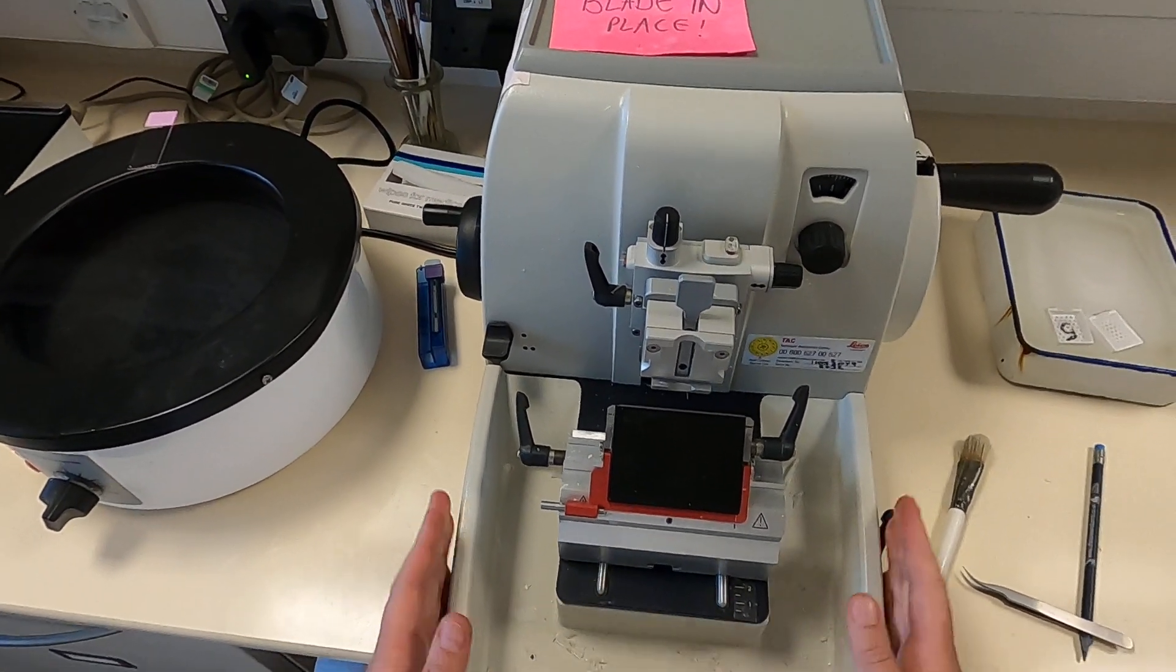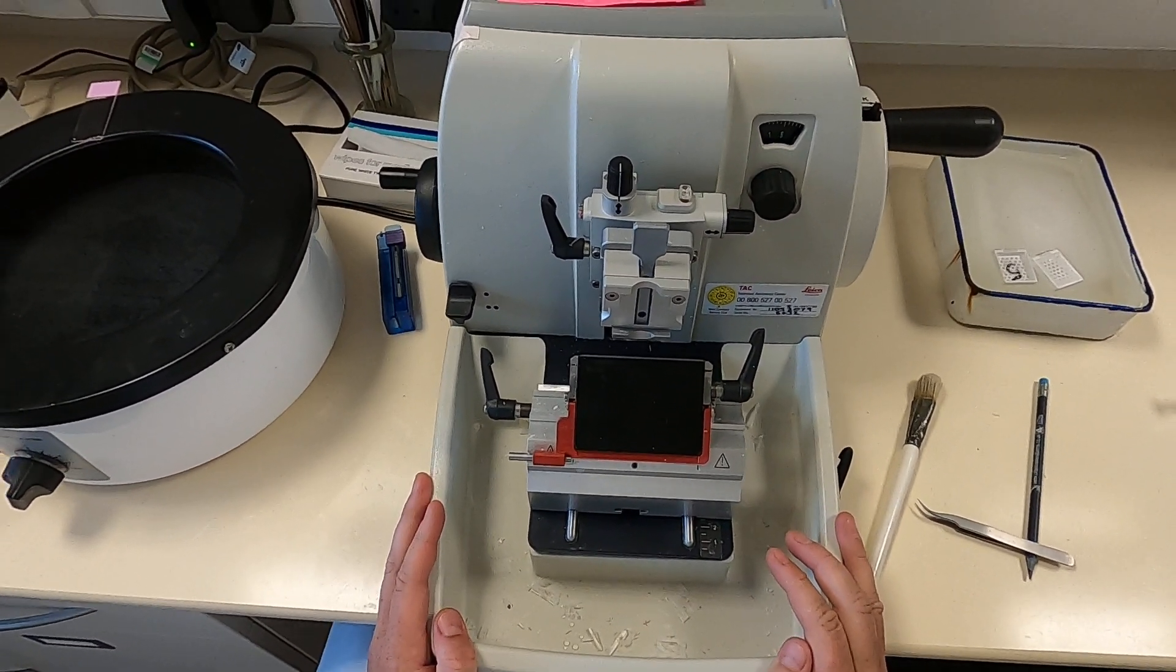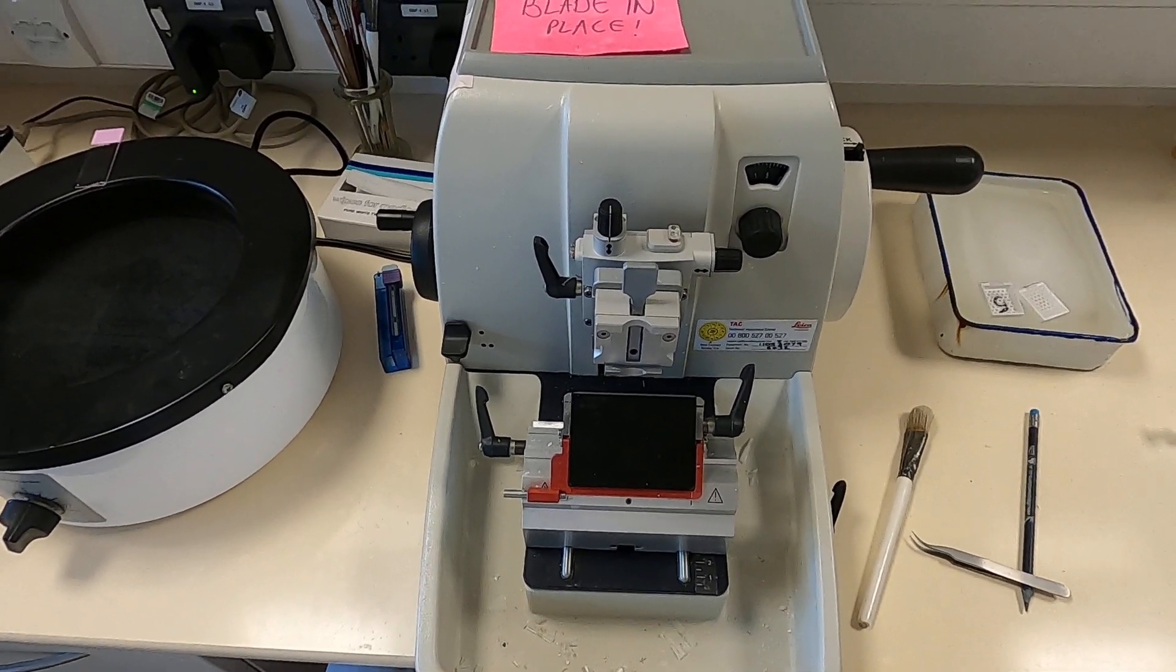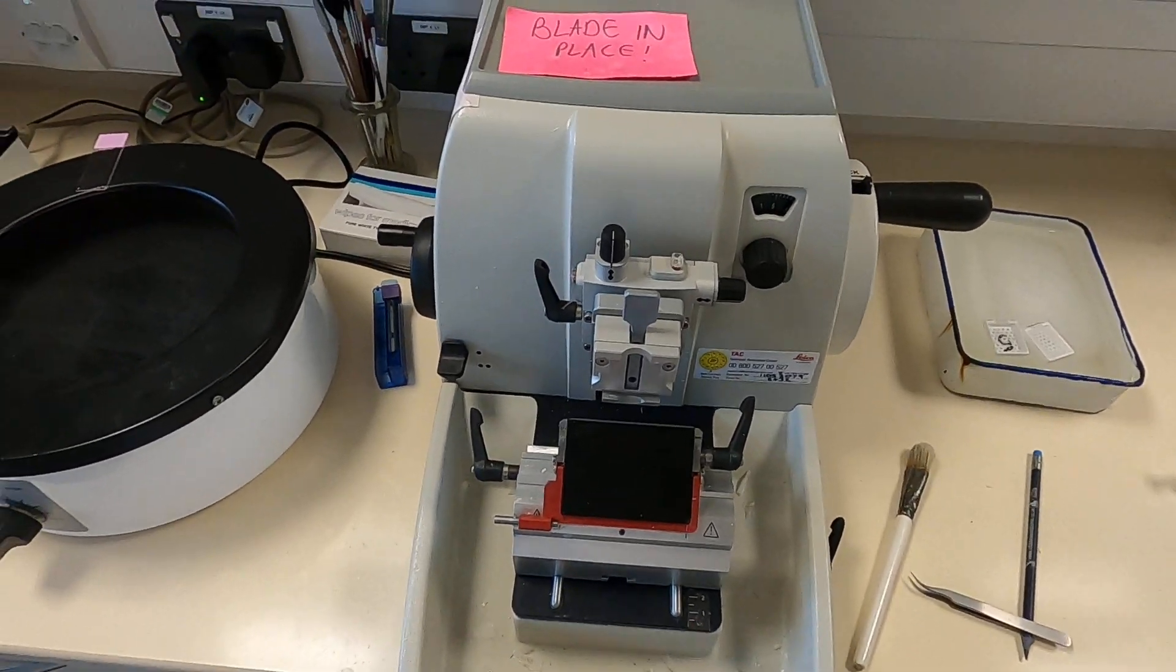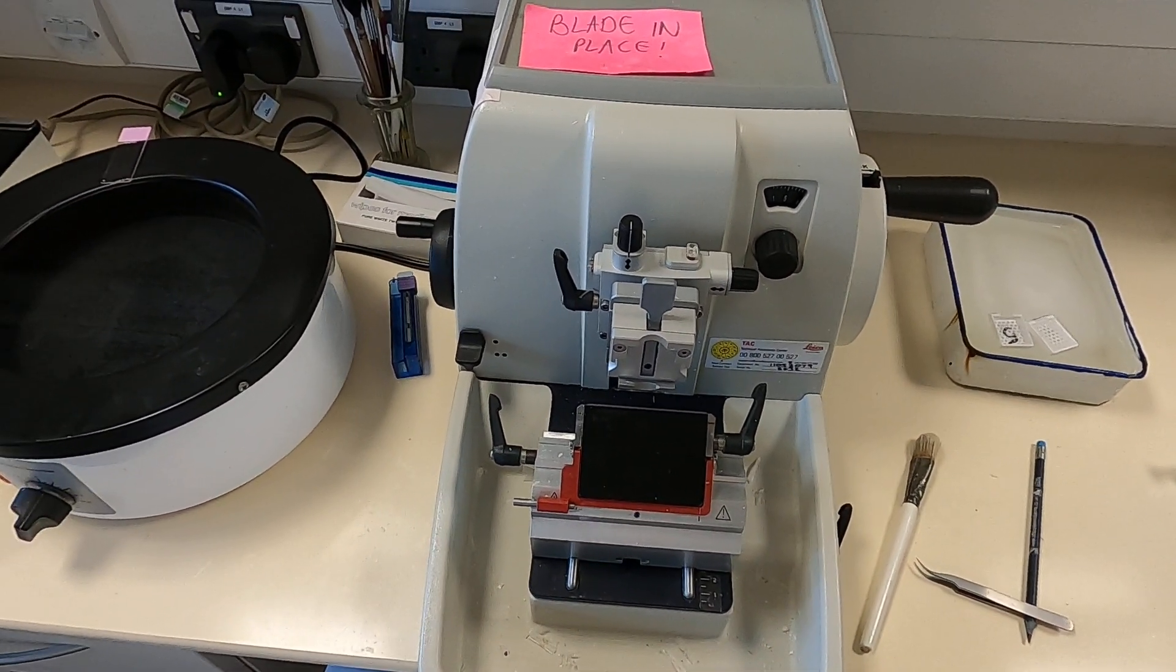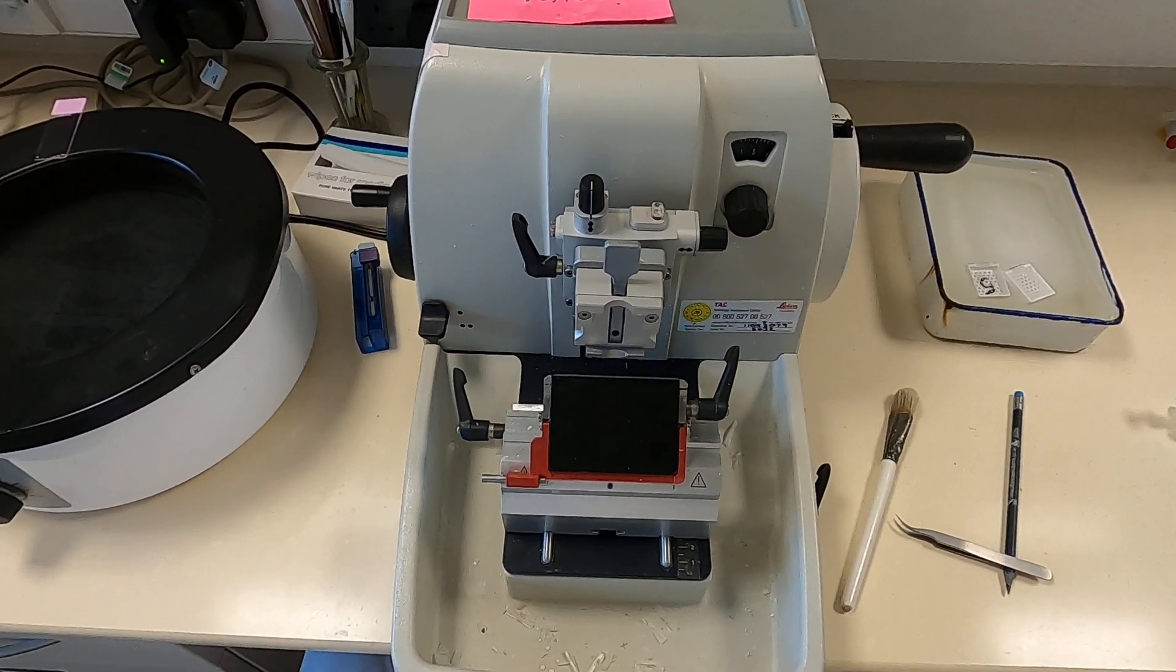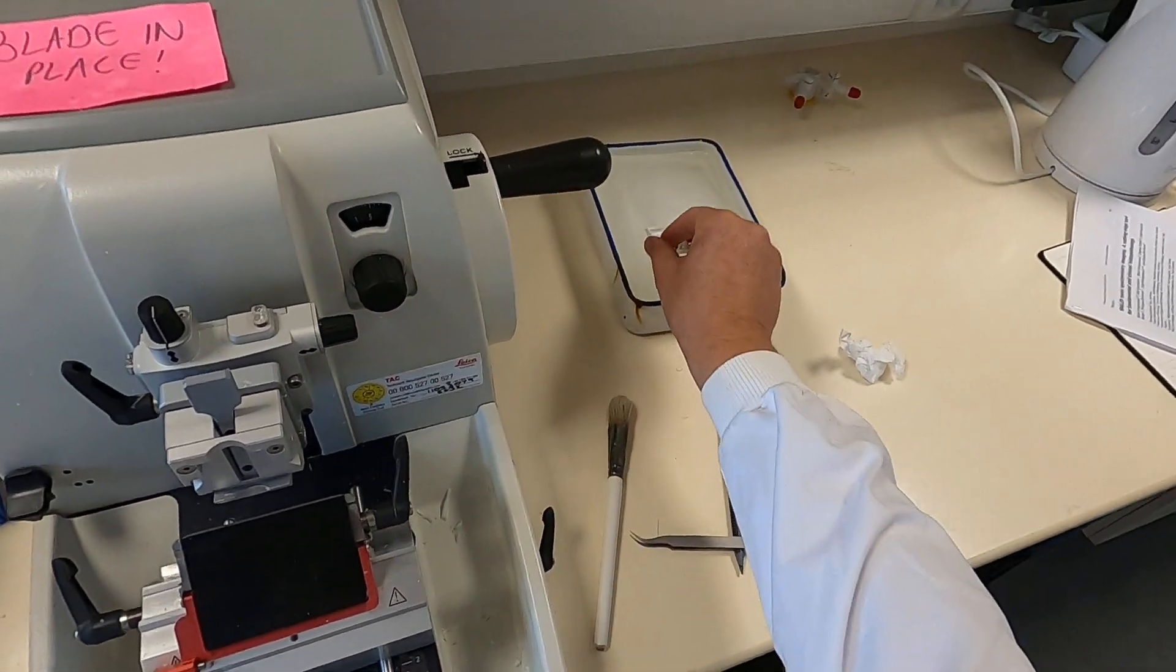I've got some good news and some bad news for you. The good news is cutting sections is really easy. The bad news is cutting sections is really hard. It requires you to be quite dexterous, and to be honest, a skilled histologist makes it look like the easiest thing in the world. When you actually have a go yourself, it is remarkably difficult. So how is it done?